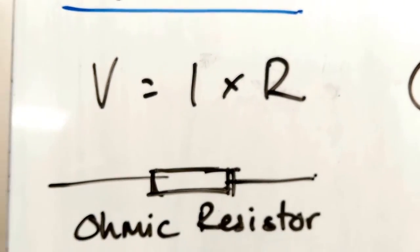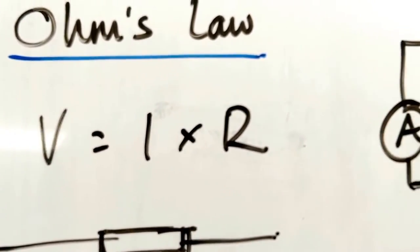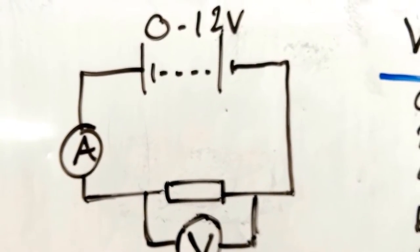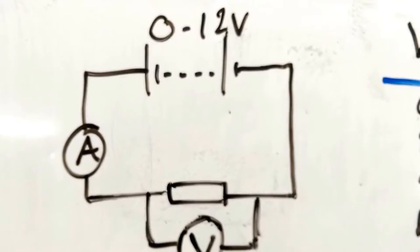What is Ohm's law then? Well, it applies to any ohmic resistor. Normally, the experiment you'll do will be set up like this: a power pack, a variable power pack from 0 to 12 volts.